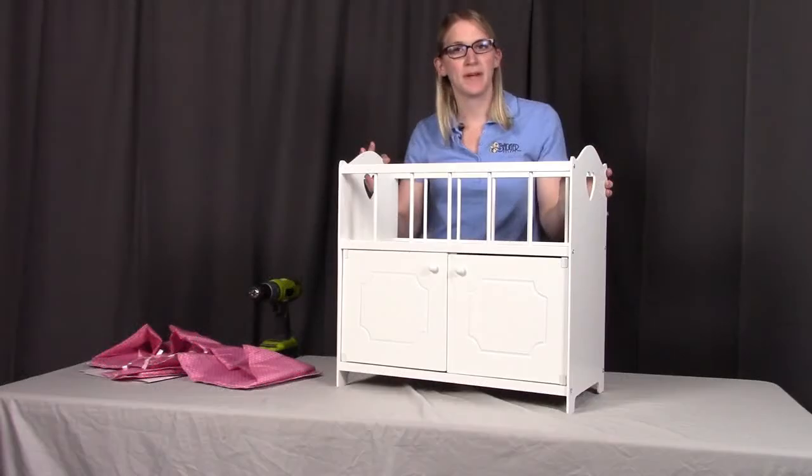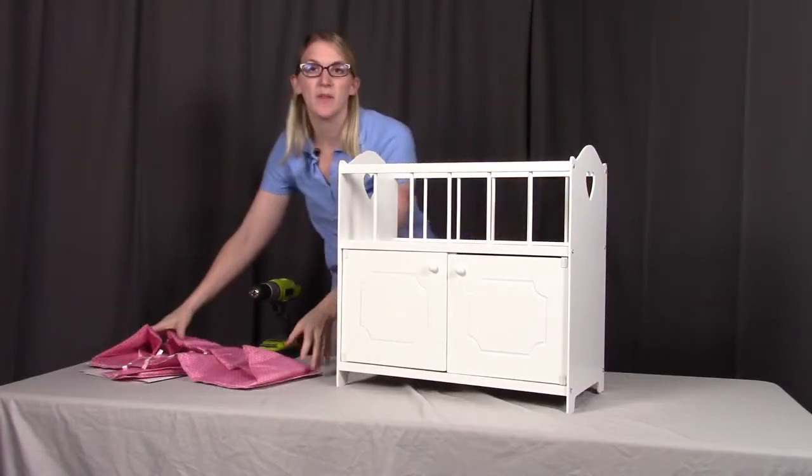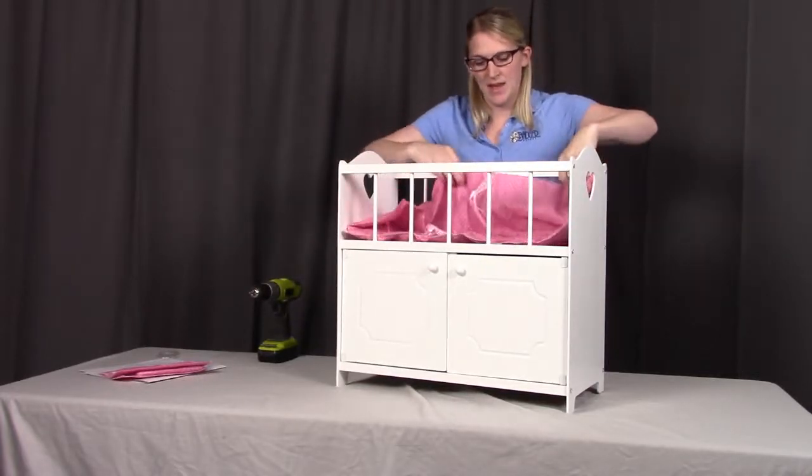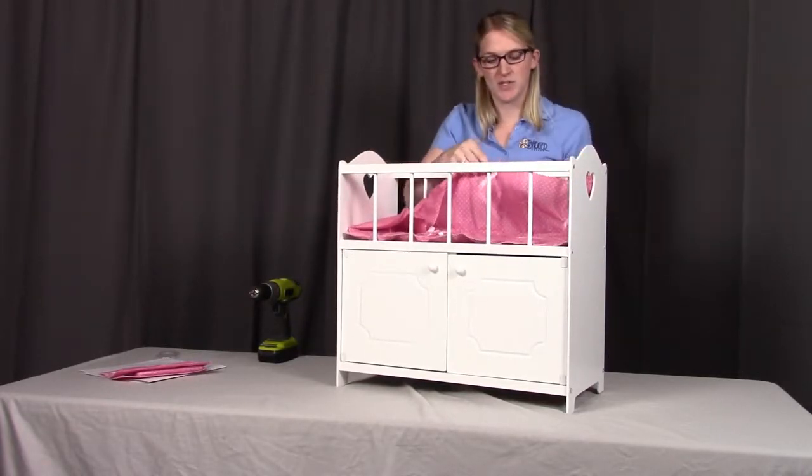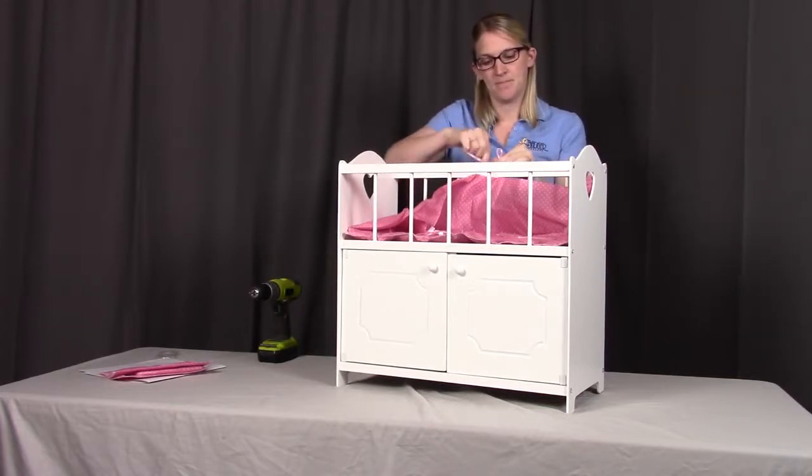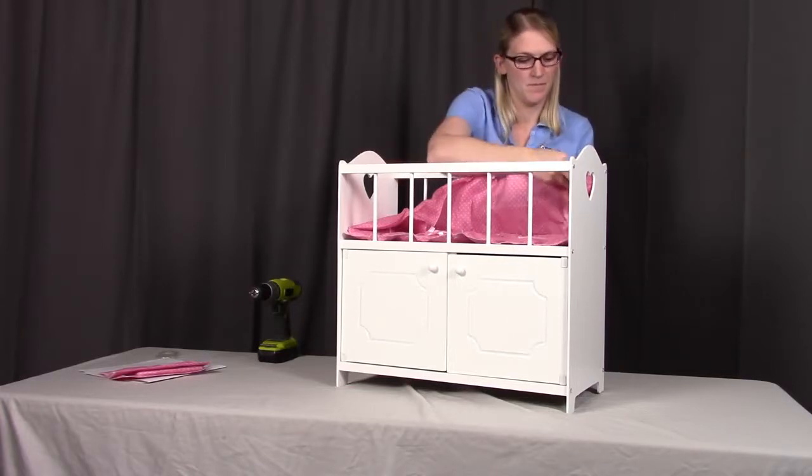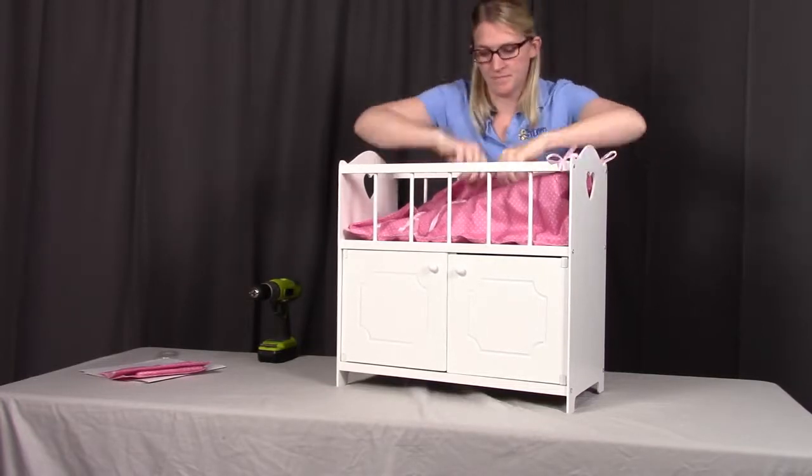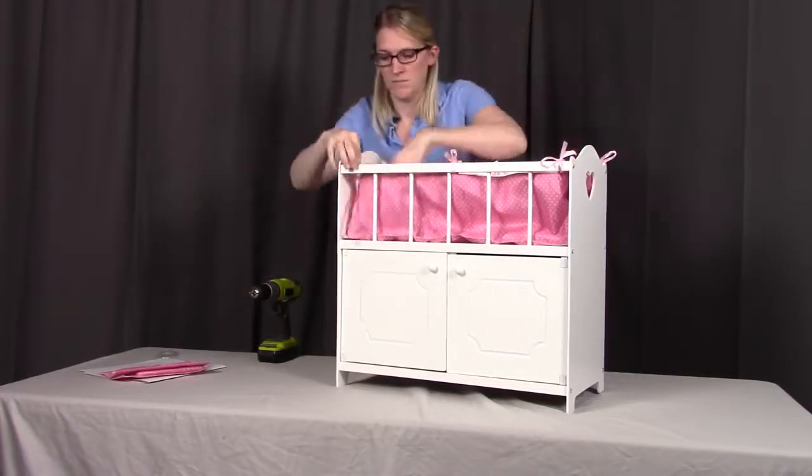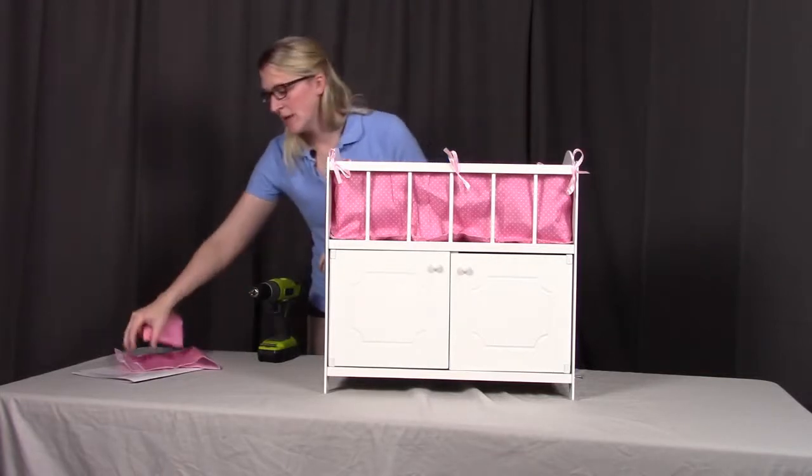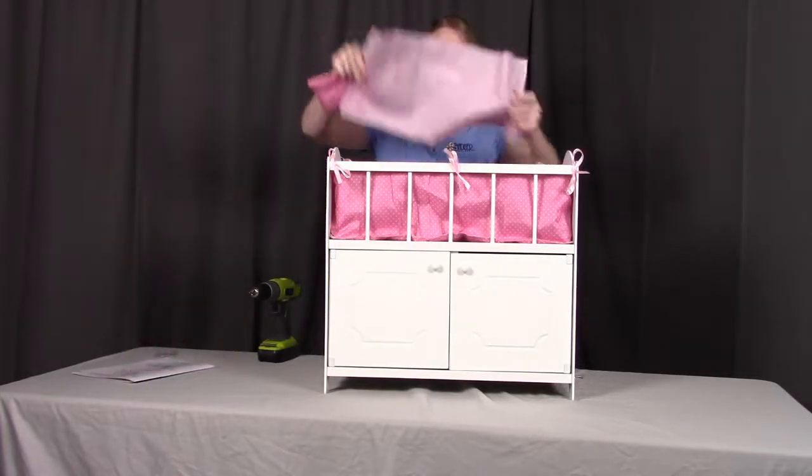That concludes step three. Now moving on to step four, what you need to do is put in the bumper liner. So we're going to put this in here and the ties will be facing up towards the top and you can tie them to the top rails here. Once you have them tied, all you need to do is put in the blanket and the doll pillow and you are all set.